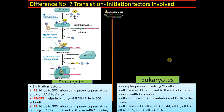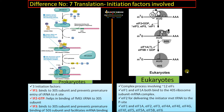In eukaryotes, the initiation process is extremely complex and involves approximately 12 initiation factors. For example, eIF1 and eIF1A both bind to the 40S ribosomal subunit-mRNA complex. eIF2 is involved in delivering initiator methionyl-tRNA to the P site, just like IF2 in prokaryotes. Many other eukaryotic initiation factors guide the association of small and large ribosomal subunits for translation to begin.